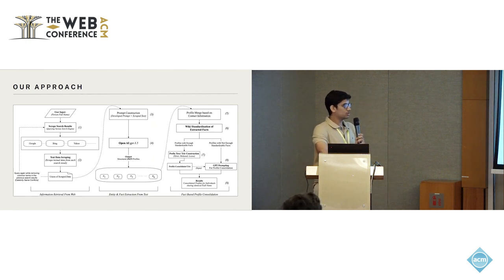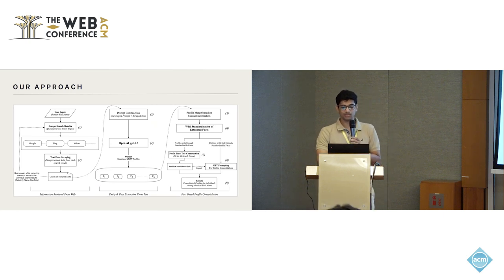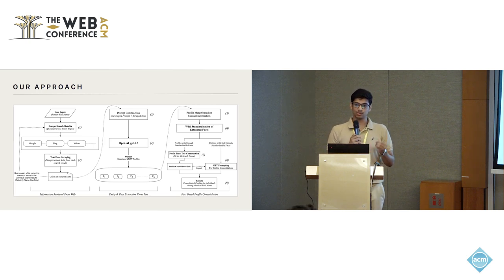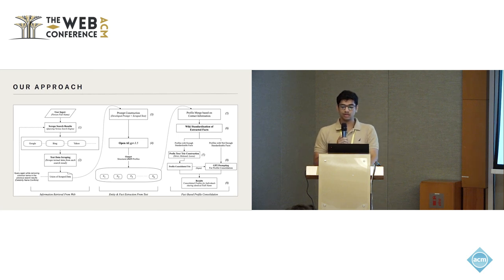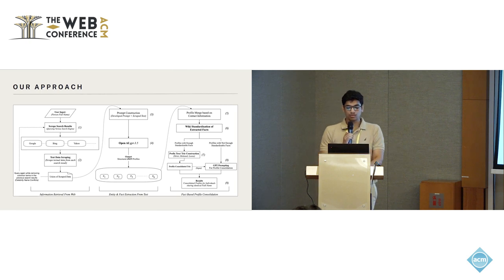Our approach presents a three-vertical pipeline to address all these challenges using LLMs and a sophisticated pipeline. It is grounded in the principles of extracting valuable factual information verifiable from online sources using LLMs and prompt engineering, and standardization of extracted facts. The pipeline is broadly divided into three verticals: information retrieval from the web, entity extraction from text, and fact-based profile consolidation.